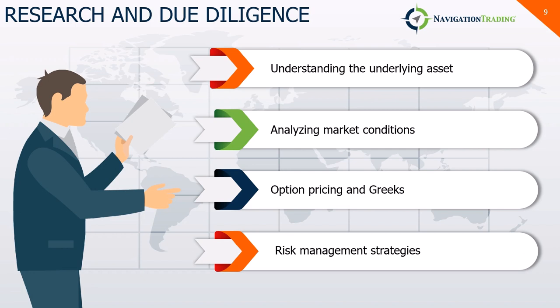Continue to learn about options pricing and the Greeks — we talked about theta, but there's also delta, gamma, and vega. Apply your knowledge: start paper trading and start understanding when and why options are priced the way they are. Risk management is critical — you need a strategy you're comfortable with and you need to stick to it, protecting your capital and mitigating potential losses. Don't risk more than you're willing to lose. With options you can position size exactly to the risk you're willing to take — use that to your advantage.